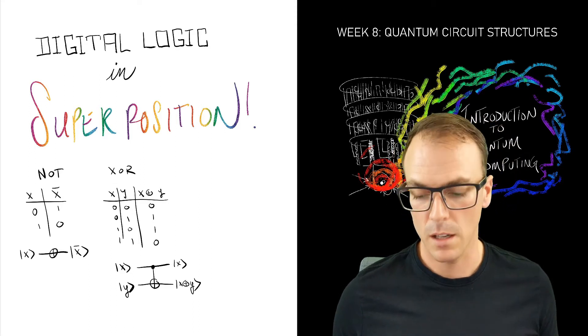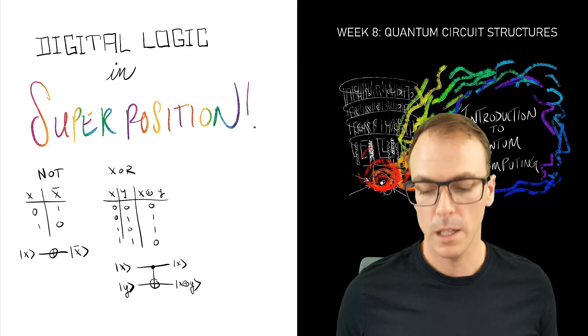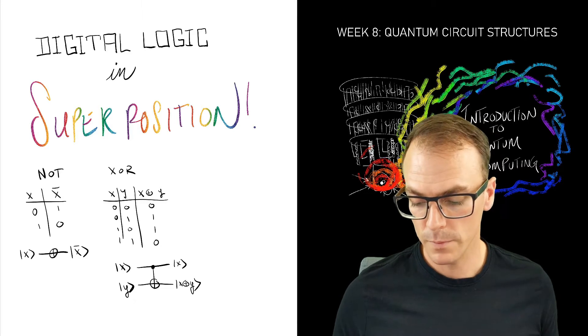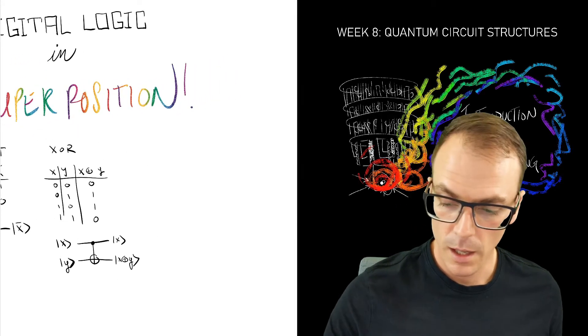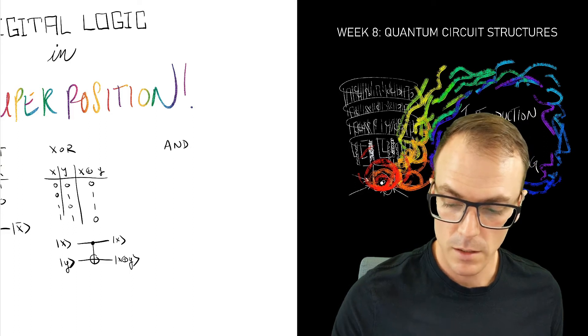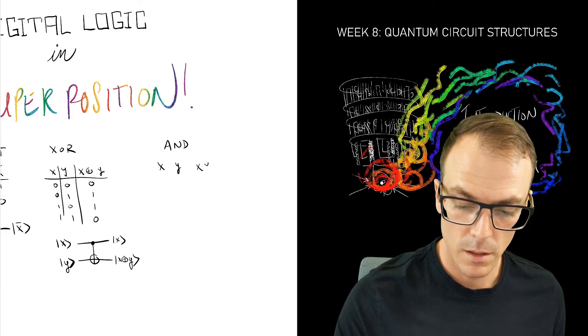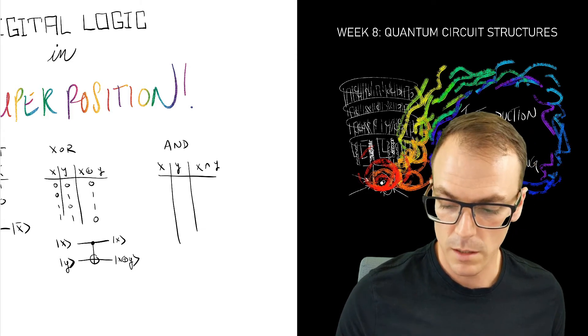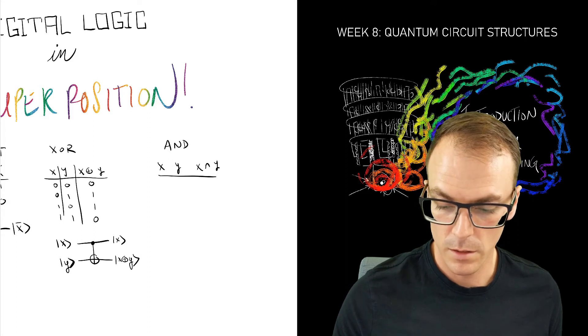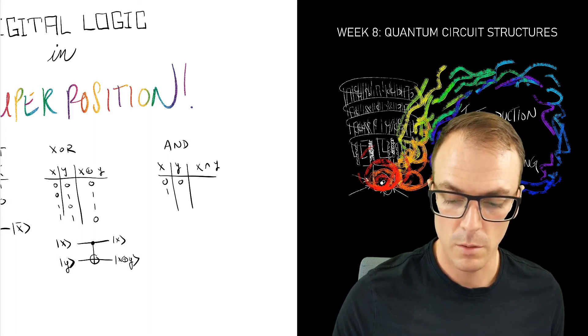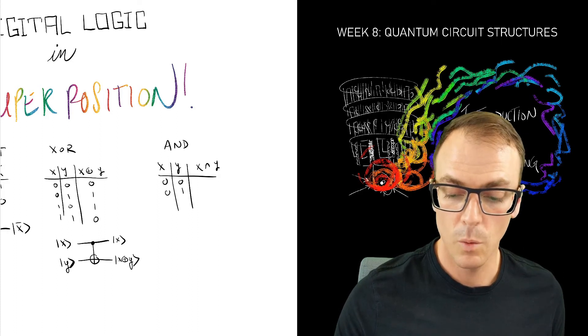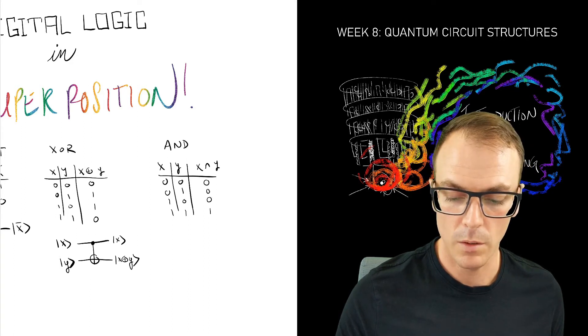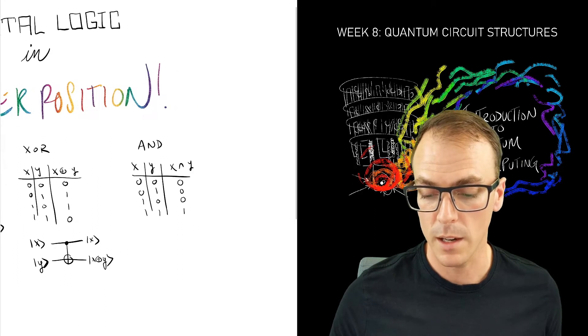The CNOT gate takes a as input and flips the second qubit, the controlled qubit, only if the first qubit was 1. And finally we have the AND which is true only when both the input bits are 1. So 0 0, 0 1, 1 0, 1 1, and this is 1 only if the two input bits are 1 and then 0 otherwise.